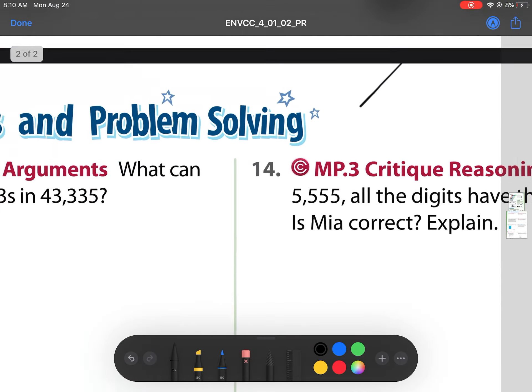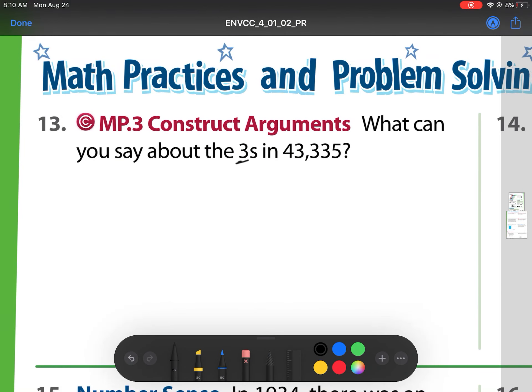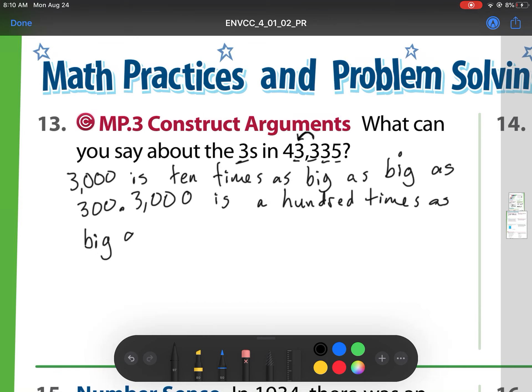Heading on to our next page. What can you say about the threes in 43,335? Well, let's look at each of them. So we are going to start with this largest one. And we'll say 3,000 is 10 times as big as 300. And how do we know that? Well, it's one place value removed. We can also say 3,000 is 100 times as big as what? Well, notice this would be times 10 times 10, which is 100. So 3,000 is 100 times as big as 30.